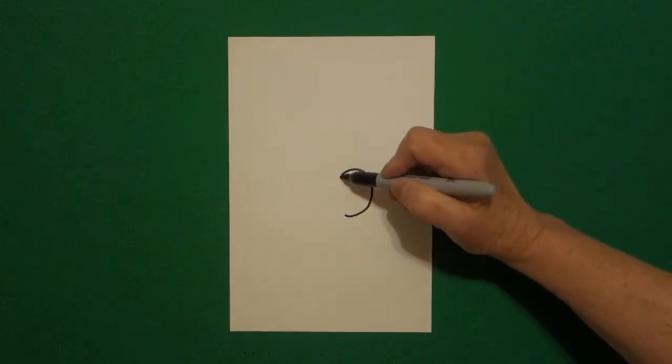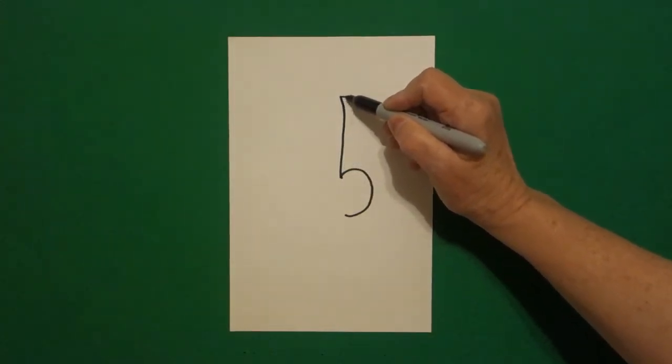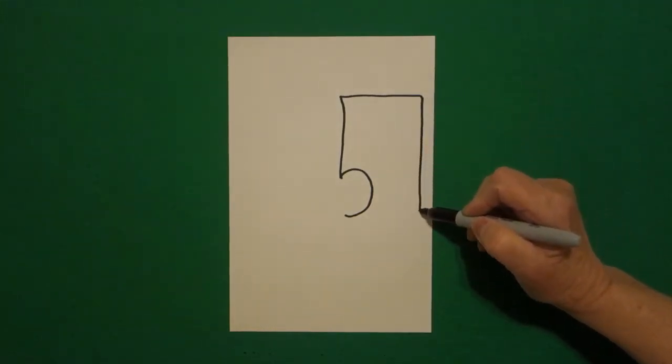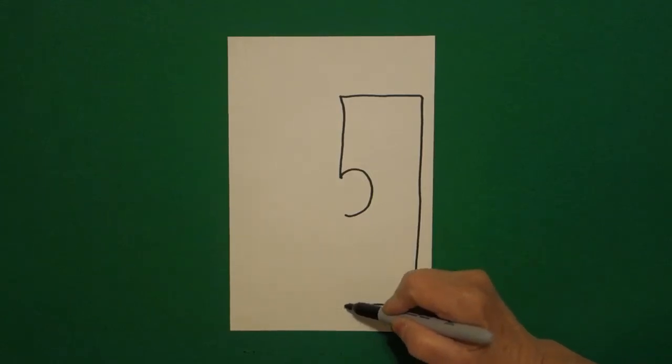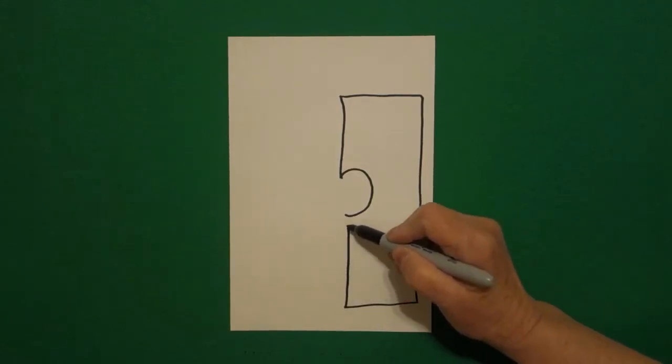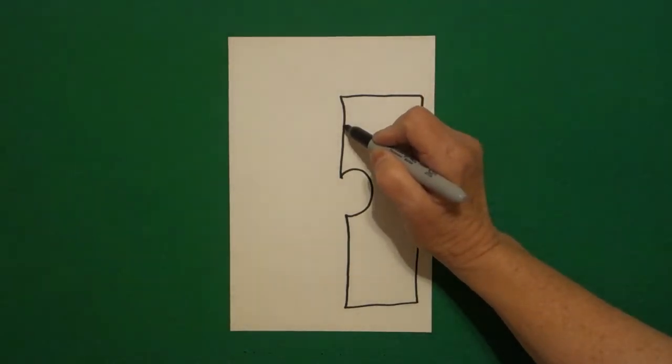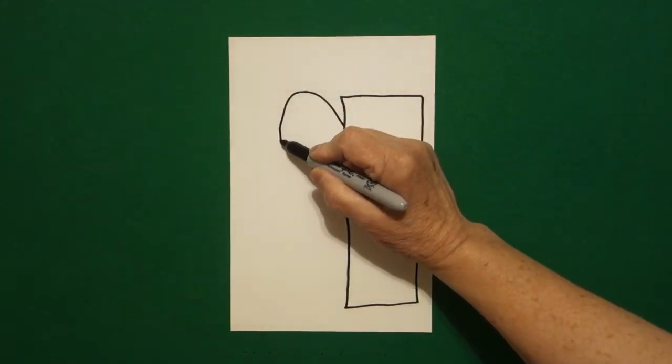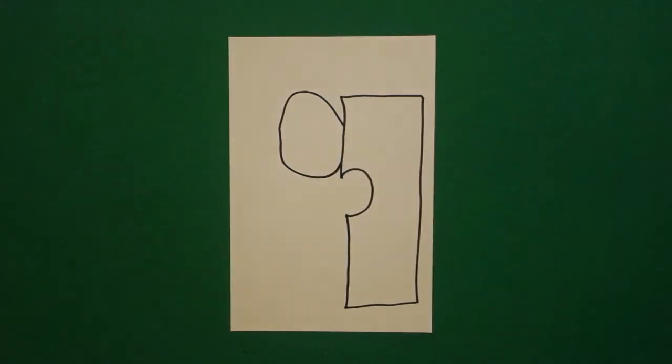I come right here where my dot is and I draw a straight line up, straight line over, straight line down, straight line over, straight line up, and connect. Right about here, I'm going to draw a curved line out, curved line down, curved line in, and connect.